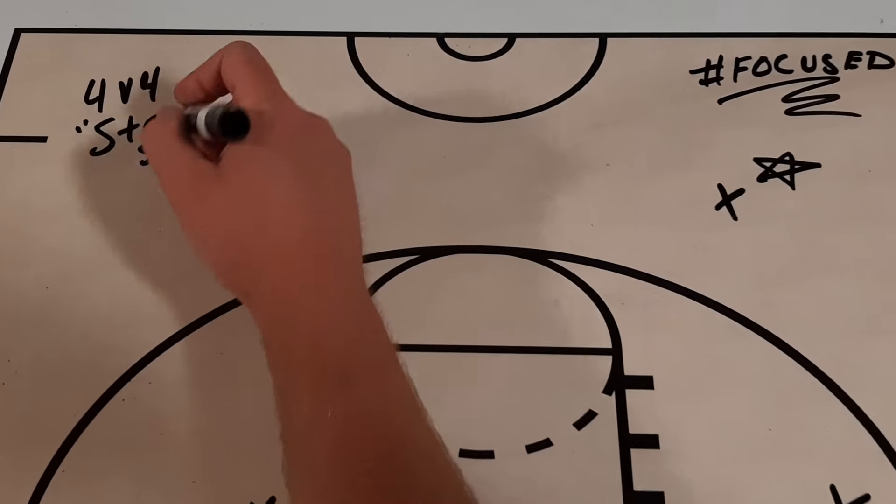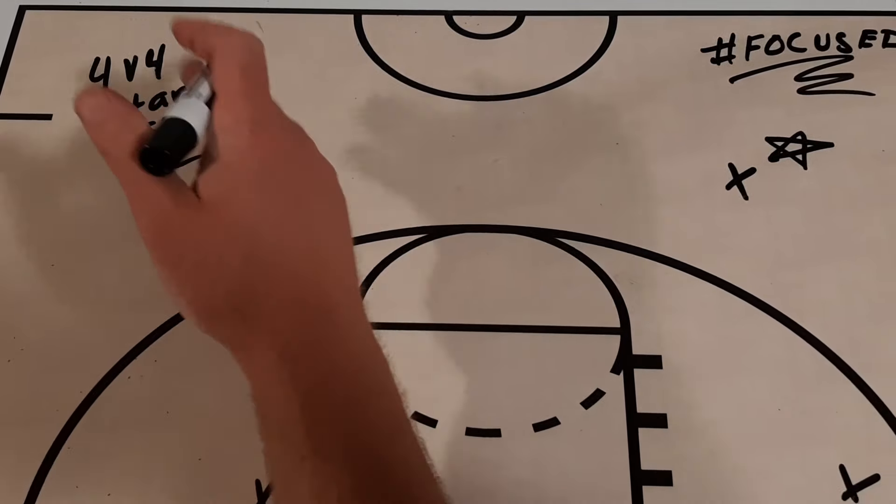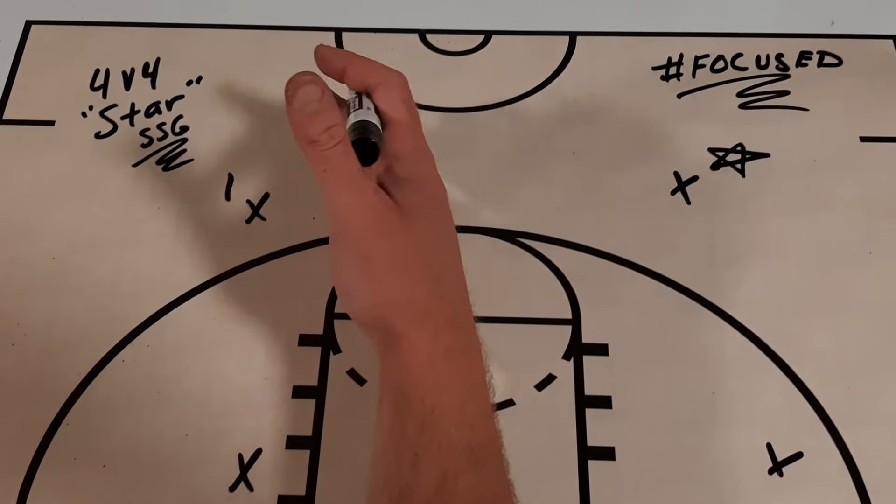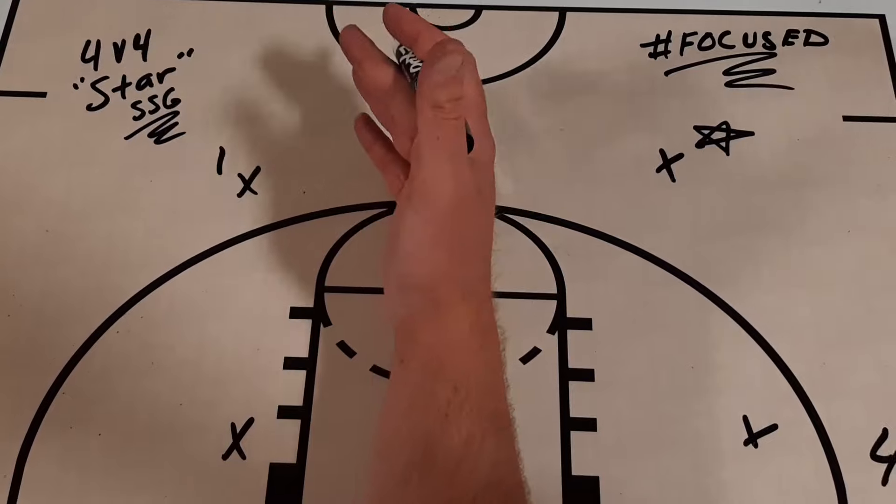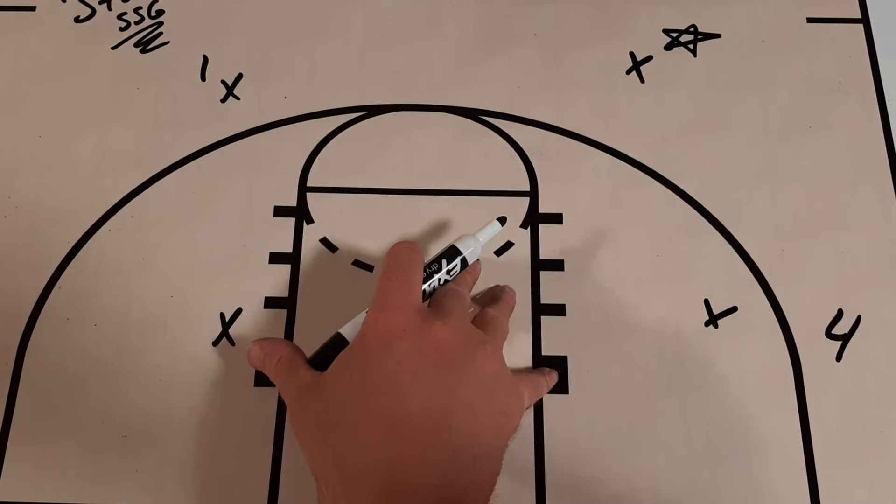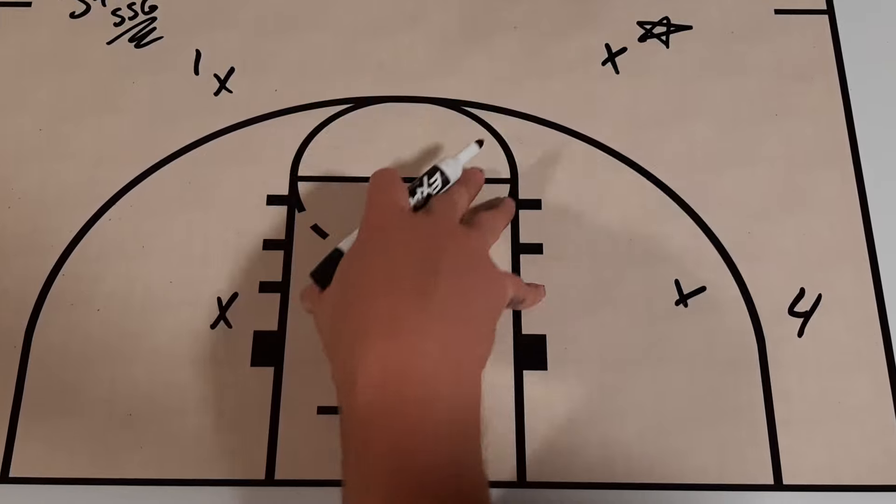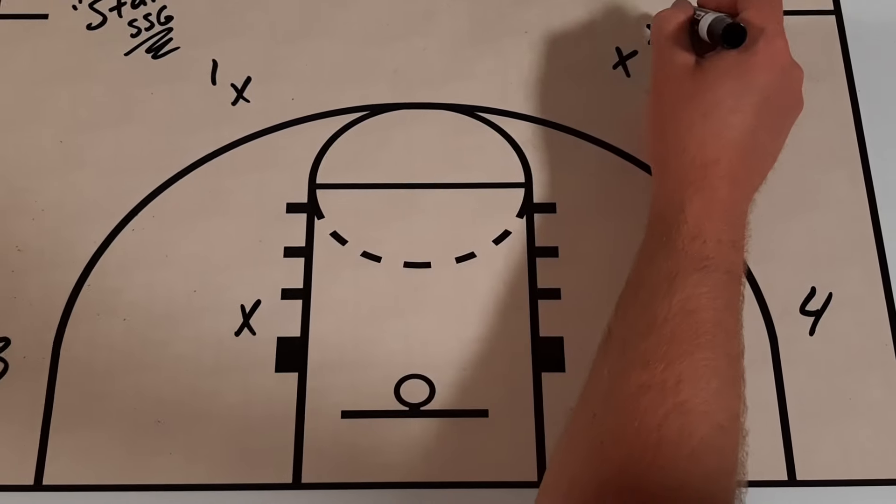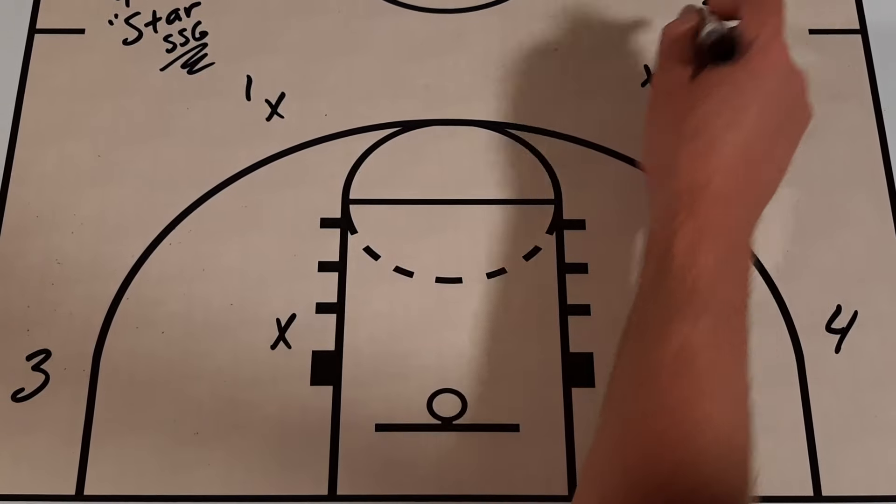I call this SSG 4 vs. 4 star. There's a lot of different names for it that coaches have, and it's really simple in principle. So you have your 4 vs. 4, you can do 3 vs. 3, you can do 5 vs. 5 if you wanted to in the half court. This player is our star player.